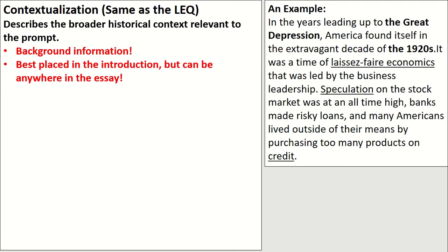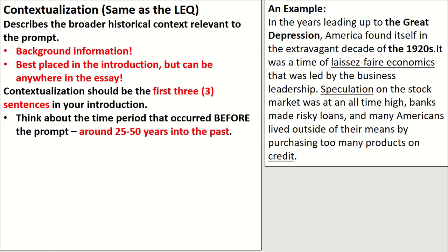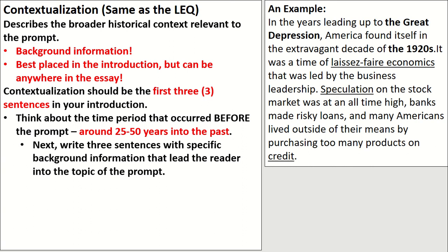It's best placed in the introduction, but you really can put contextualization anywhere in the essay. You want to knock this point out first, so try to put it in the introduction if you can. Contextualization should be the first three sentences in your introduction. Think about the time period that occurred before the prompt itself — around 25 to 50 years into the past. So if we're talking about the decade of the 1920s, it's irrelevant to talk about something that happened like in 1820. You want to make sure it's relevant. Then write three sentences with specific background information that lead the reader into the topic of the prompt — you're setting the stage for the big show, which is your essay.